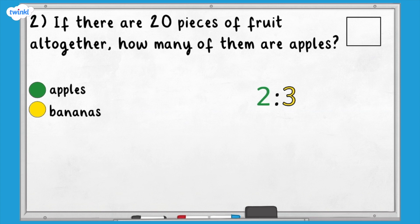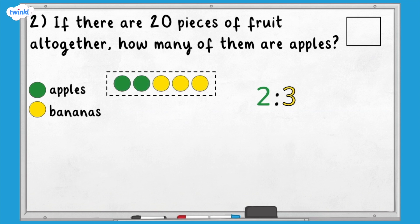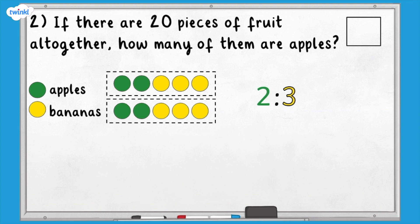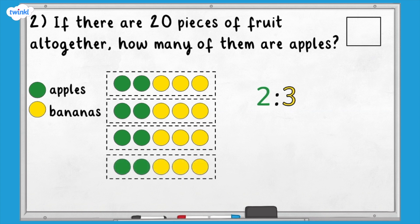For this type of question, we need to look at the total number of pieces of fruit. In the original ratio, we have five pieces of fruit. We want the total to be 20 pieces of fruit. We can create multiple groups and the ratio will stay the same — now we have 10, then 15, then 20 pieces of fruit all together. We can see that if there are 20 counters all together, eight of them are green, so there would be eight apples.